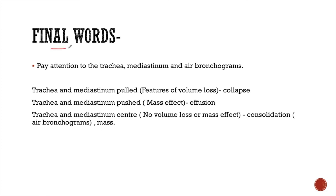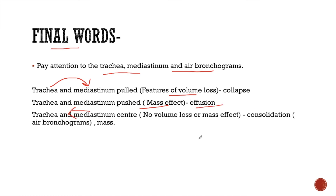Coming to the final words for the presentation. In case of an opaque hemithorax, you should look for features of volume loss or mass effect to come to the diagnosis. Pay attention to the trachea and mediastinum, and also look for the presence of air bronchograms. If there are features of volume loss — indicated by shift of the trachea and mediastinum towards the same side — this indicates lung collapse. If there are features of mass effect — trachea and mediastinum pushed away from the side of the opacity — then this is due to effusion. If the trachea and mediastinum are central in location, think of either consolidation or mass. Lung masses are usually rounded in shape, while consolidations are characterized by air bronchograms.